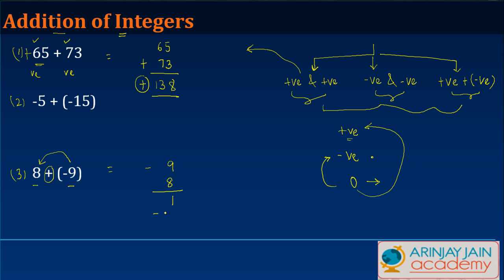9 minus 8 gives you 1. And we put in the sign of the 1 with the larger number. So, in this case, minus 9 was more than 8. In other words, 9 was more than 8. And 9 had a negative sign. So, to the result, I will add a negative sign.